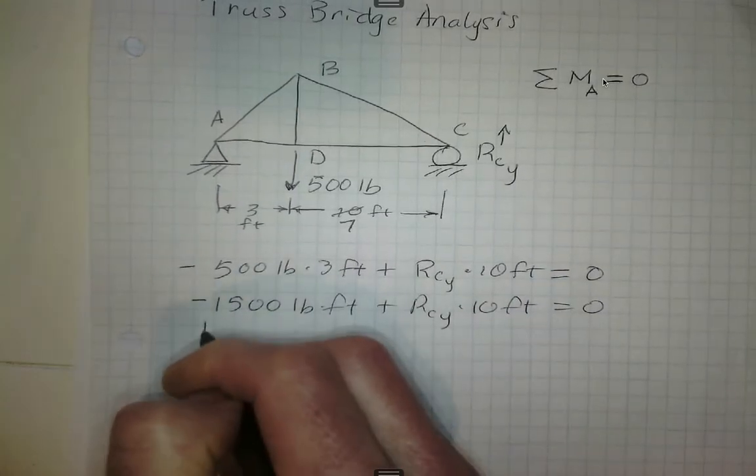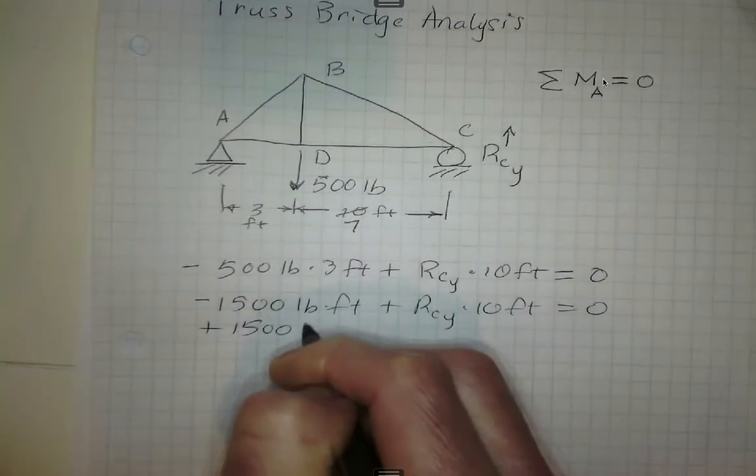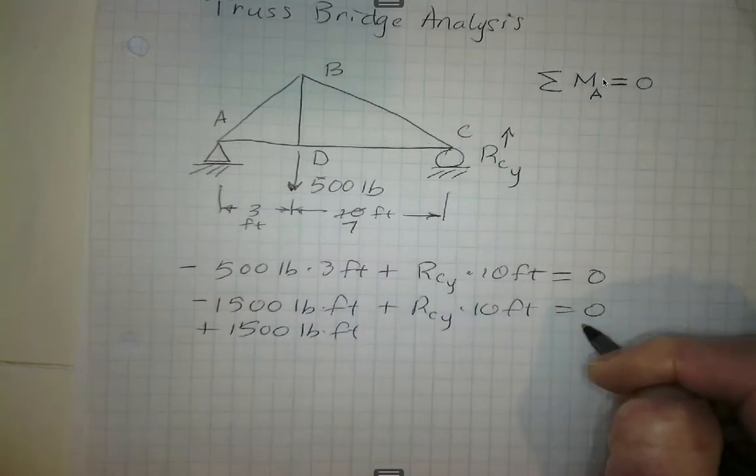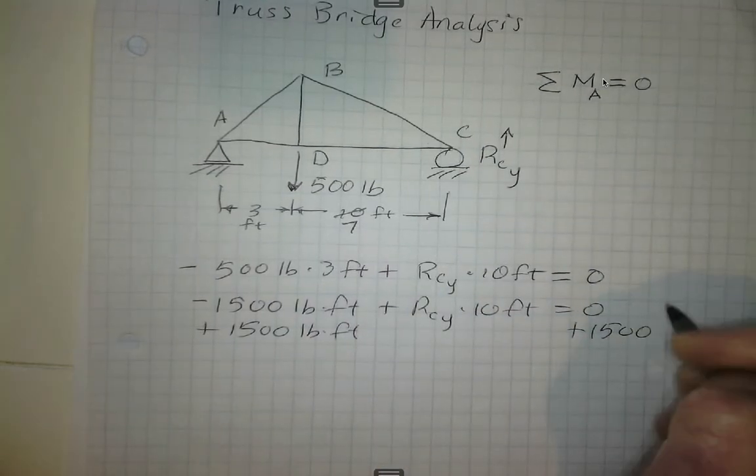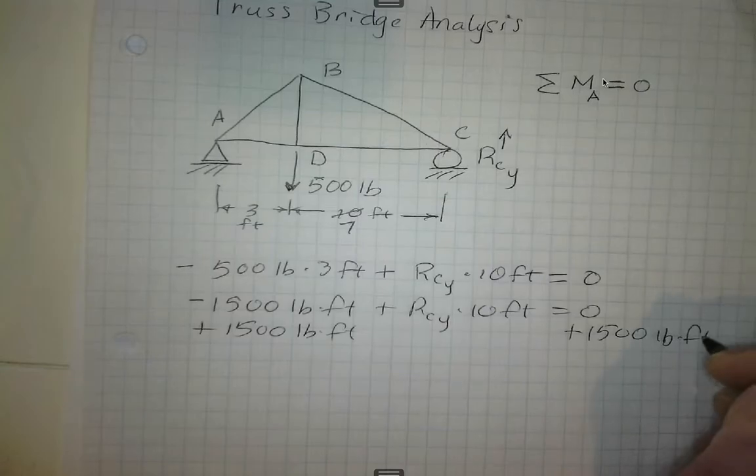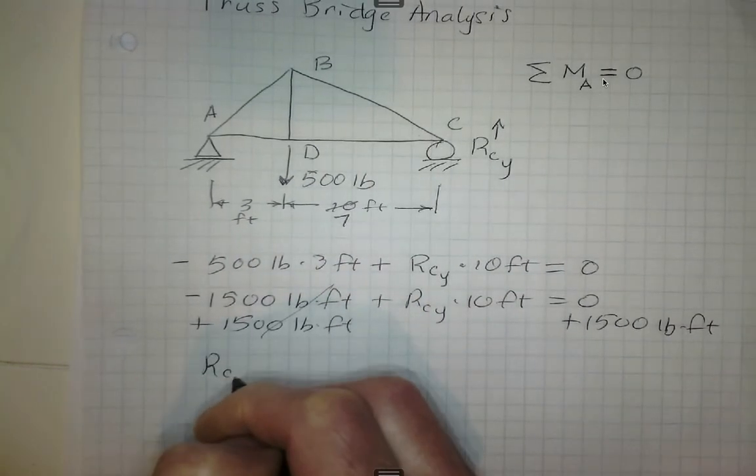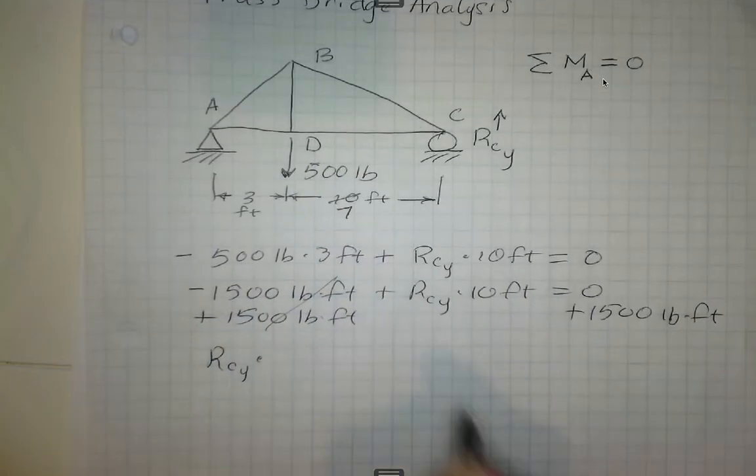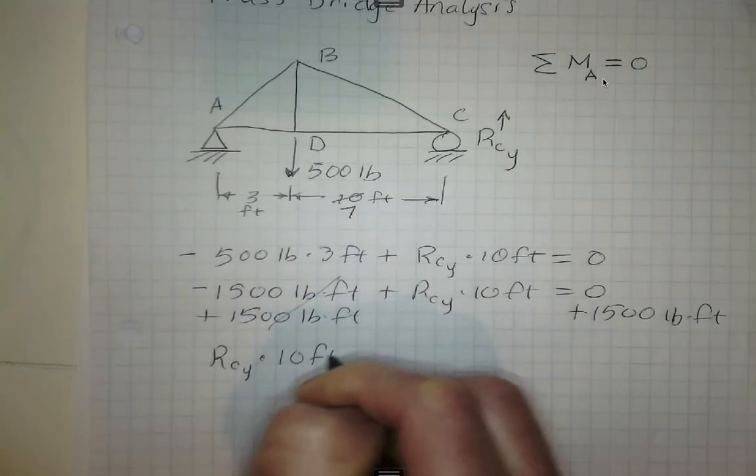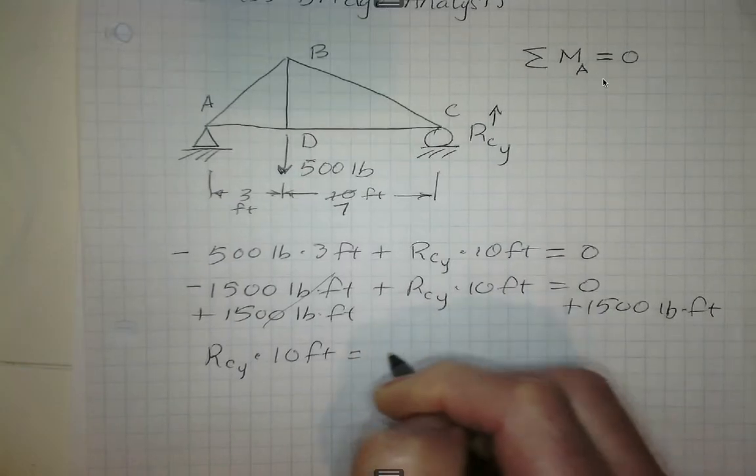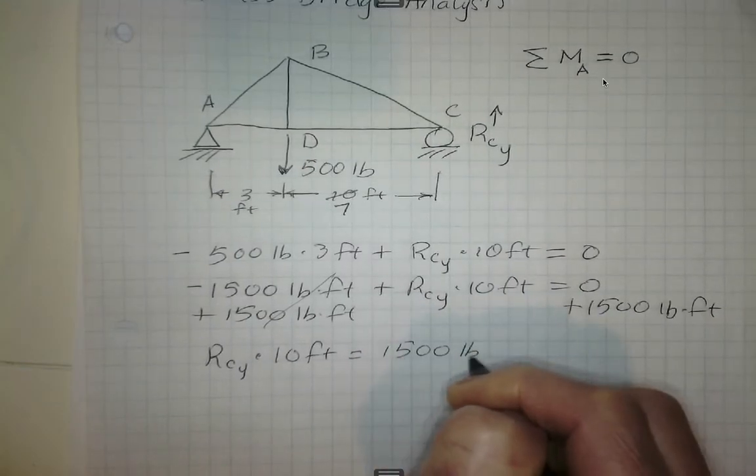We're going to add 1,500 pound-feet to both sides. That gets rid of that on one side. We're left with the reactionary force at point C in the y direction times 10 feet is equal to 1,500 pound-feet.